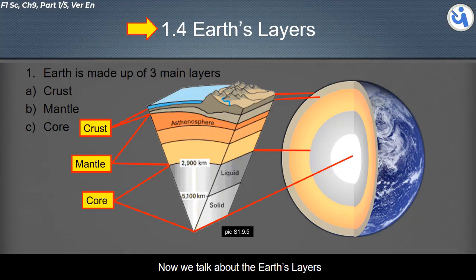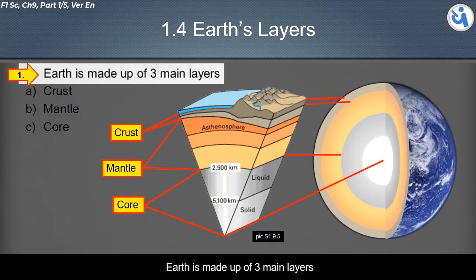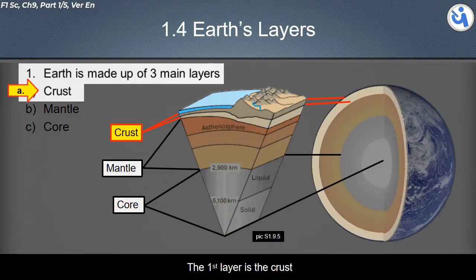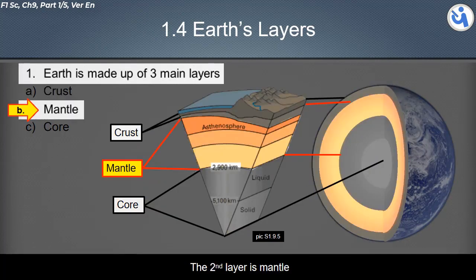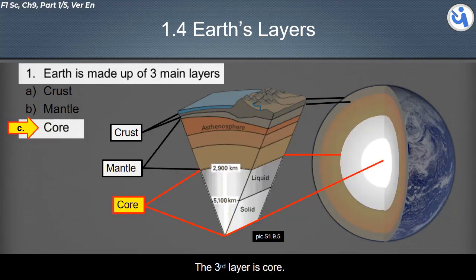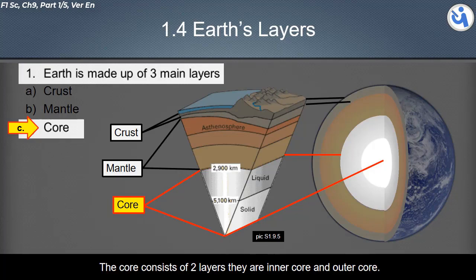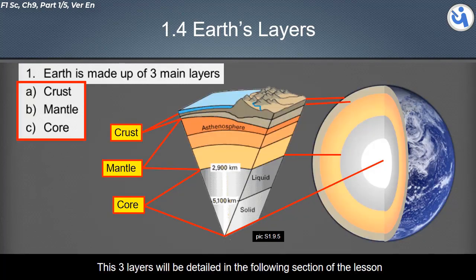The Earth is made up of three main layers: the crust, the mantle, and the core. The core itself consists of two layers — the inner core and the outer core. These three layers will be detailed in the following section.